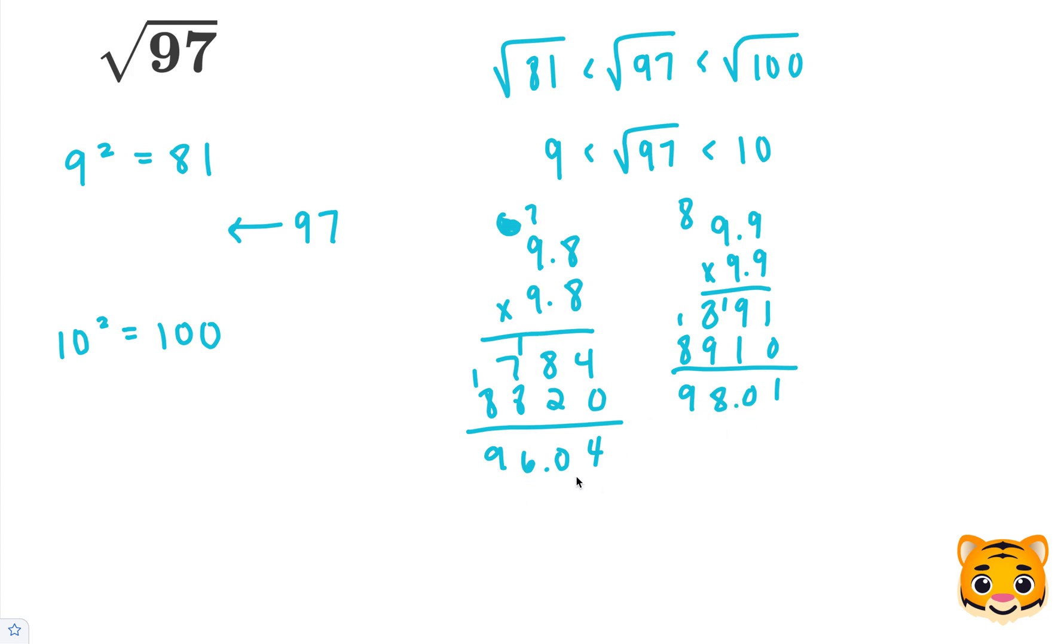We can see that the 96.04 is actually a little bit closer to 97 than the 98.01 is. So, we can see that 9.8 squared gives us approximately 97.